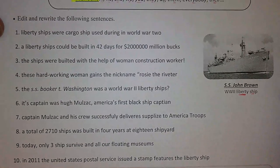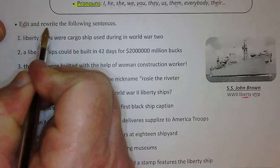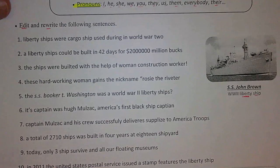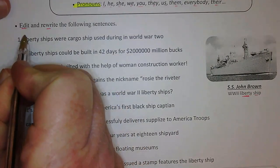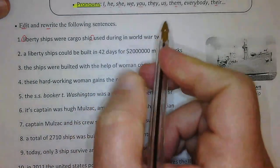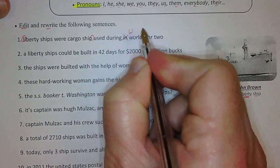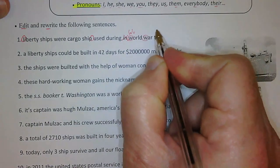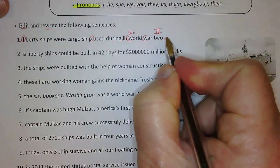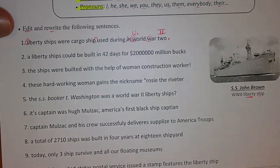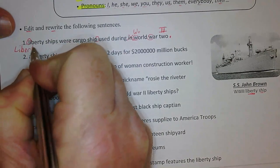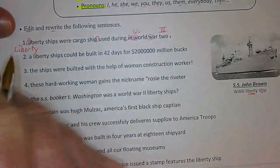Let's go back to our directions at the top: edit and rewrite the following sentences. I'll go through and circle things I want to change. Right away I see 'Liberty' needs to be capitalized — Liberty ships were cargo ships used during World War II. 'World War II' is a proper noun. Also, whenever you use World War I or World War II, use the Roman numeral. Go ahead and rewrite the corrected sentence on a separate line or squeeze it in below.